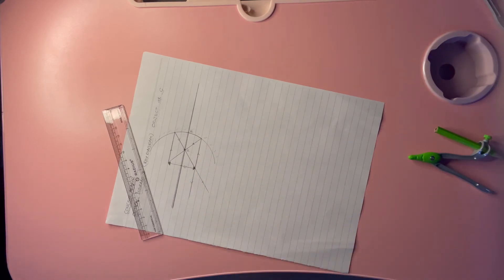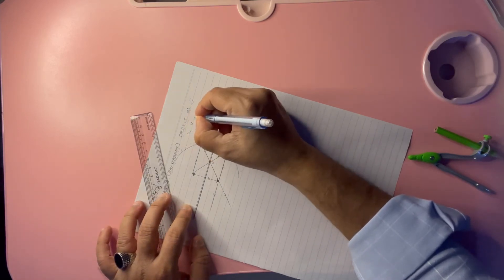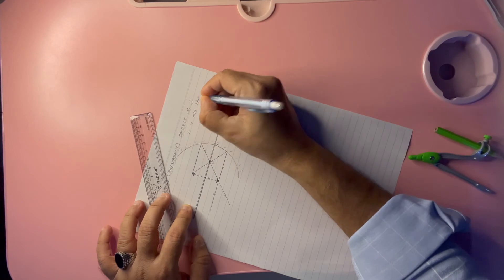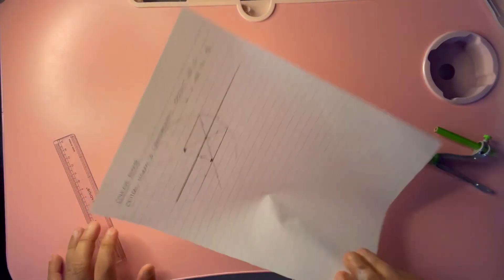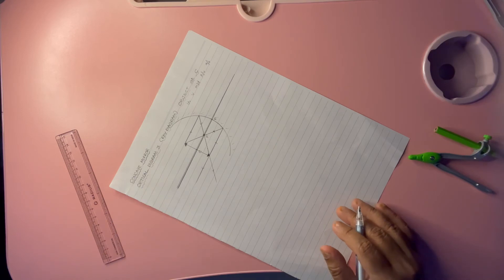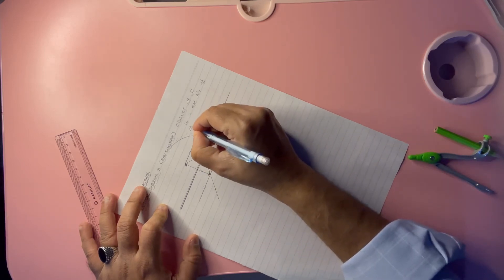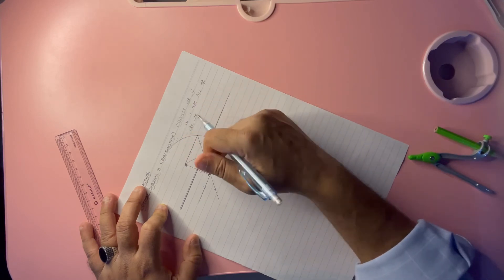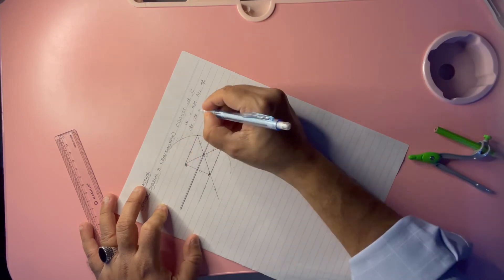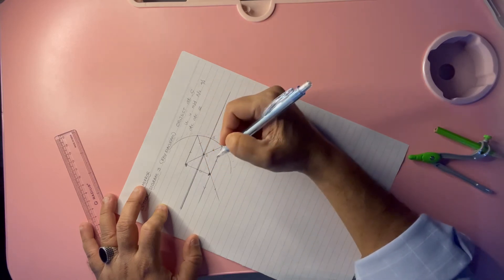That is perfection. Let us write all the required values here: u, v, magnified, diminished, real, virtual, erect, upside down. As per our previous video, we are doing these five points, isn't it? So u: object at C, image at C. Magnified or diminished? Both are same size—two line size, two line size—so equal size.